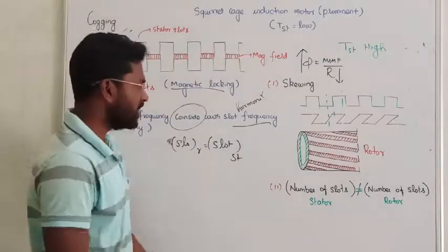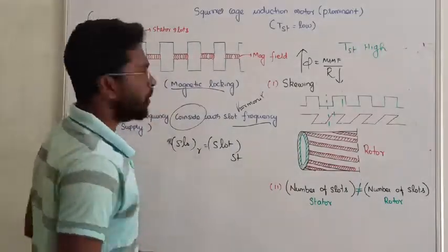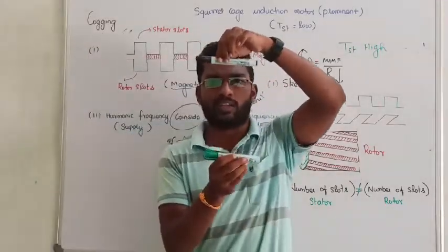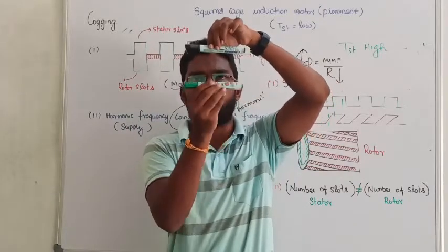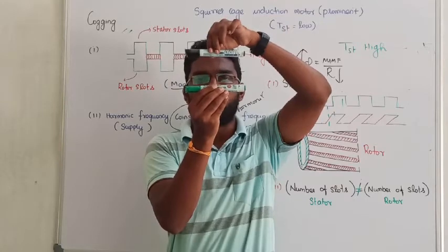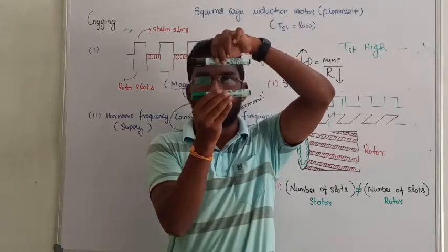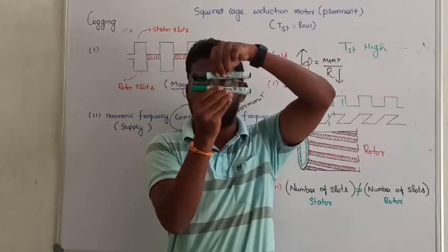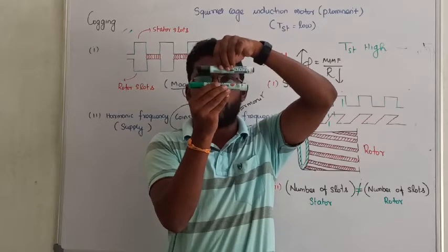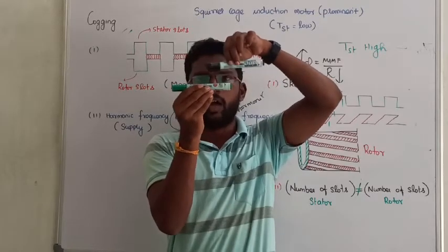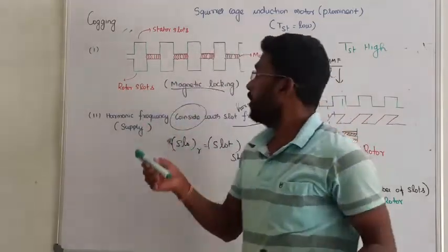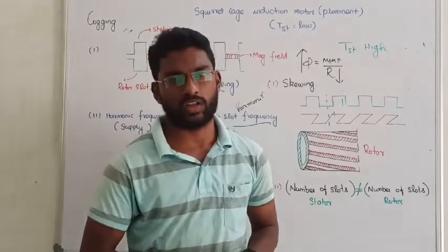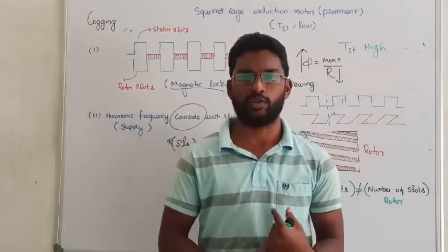So to summarize: cogging means the rotor fails to start because the stator and rotor slots are equal, they align face-to-face, and with minimum reluctance the flux locks the rotor — that is called magnetic locking or cogging. To avoid it, we skew the rotor slots or use an unequal number of rotor and stator slots. If you have any doubts, you can ask in the comment section. Thanks for watching. Bye!